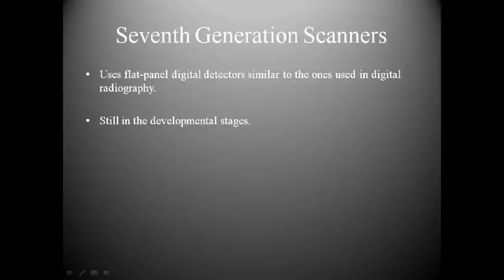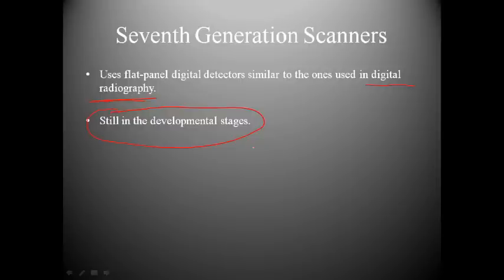Seventh-generation scanners use flat-panel digital detectors similar to those used in digital radiography, applying that technology to CT. They're still in developmental stages and we don't know when they'll prove viable — there are many considerations before reaching 7th generation practically.